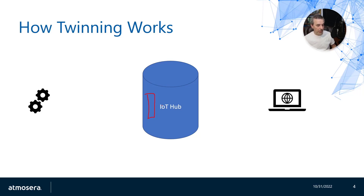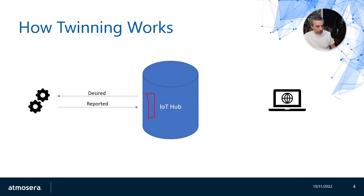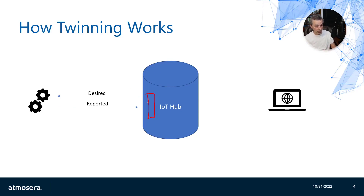The trade-off is that there might be some lag between data sent to a device and data received from a device. That lag is why a device twin typically has two different sets of data. It has what is sent to the device, called desired data — typically desired configuration or state data — and it has reported data, which is what the device actually reported back. The reported data might come back sometime later, and there could be discrepancies between what was sent as desired and what came back as reported.